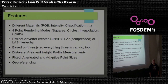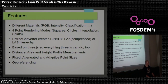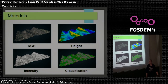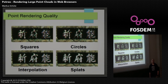Some of the features of Potree include different materials — for example, the point cloud color itself, intensity, classification, and point source ID. There are also different point rendering modes, and everything is based on Three.js, which means you can also do everything that Three.js itself can do, like rendering polygons and doing lighting and shadowing. Georeferencing is also possible. Features include different materials and point rendering qualities — usually squares and circles are available in any point cloud viewer, but Potree also has interpolation and splats.